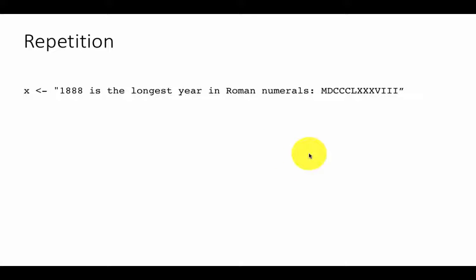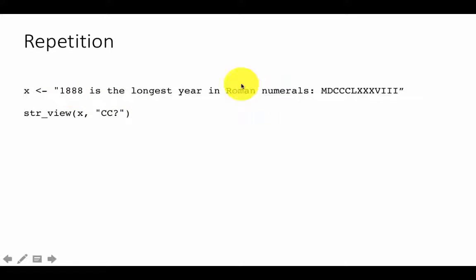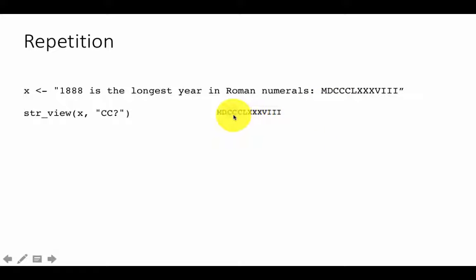Let's see an example using repetition. Here we use str_view with the regular expression 'cc?' — a c followed by an optional c. This says the string must contain a C, and then following that C it could contain zero or one more C. Clearly, this text matches: it's got a C, and following that it has one more C. So it matches 'cc', where the second c satisfies the zero-or-one condition.